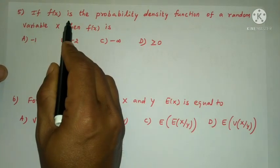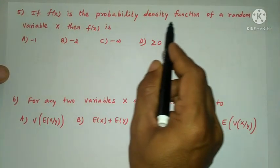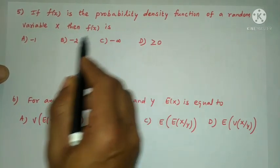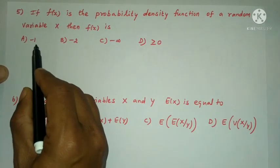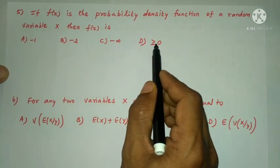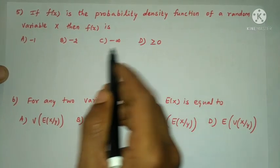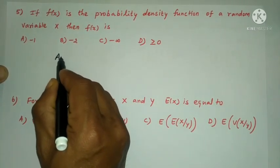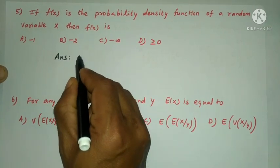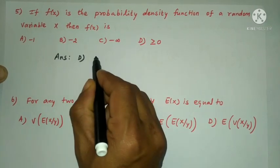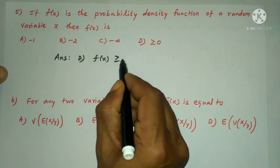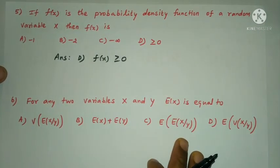Next question: if f(x) is the probability density function of a random variable X, then f(x) is — options: −1, −2, −infinity, or greater than or equal to 0. The answer is option D: f(x) is greater than or equal to 0.